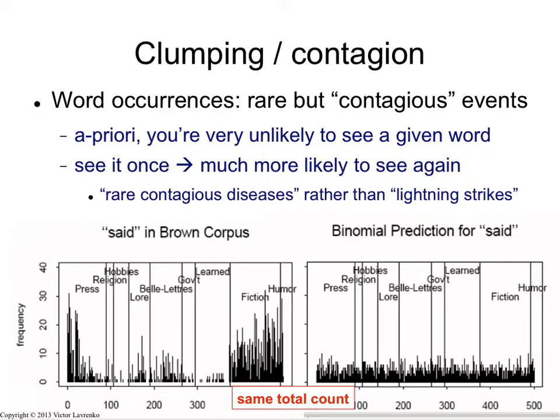What you have at the bottom of the slide is the illustration of this. I'm plotting the frequency of the word 'said' in the Brown Corpus versus the prediction for the word 'said'. On the x-axis you have 500 points — these represent the 500 documents in the Brown Corpus. The y-axis is the frequency, how many times the word 'said' occurred in that particular document. The reason we're looking at 'said' is it's probably the most frequent verb — it's the most frequent non-stop word in English.